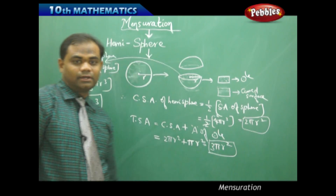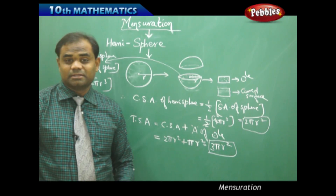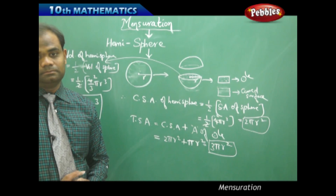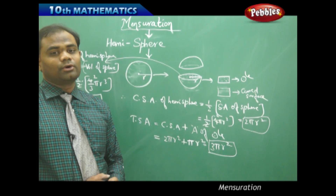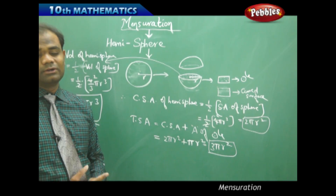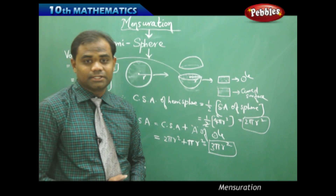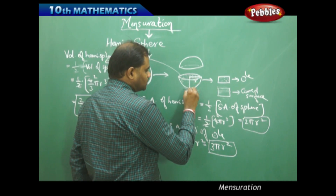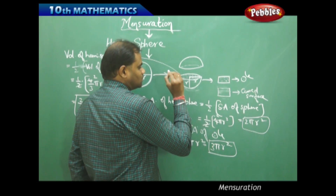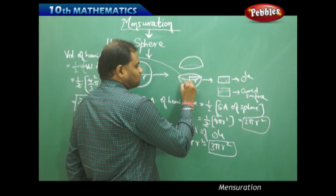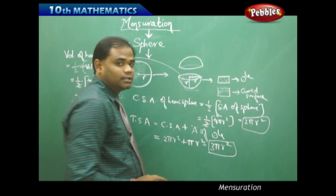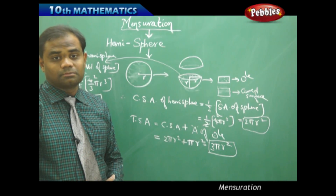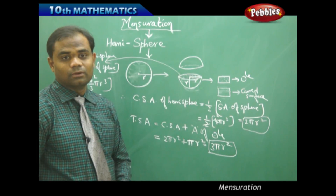The curved surface area, total surface area, and volume of the hemisphere are understood using these concepts. One important point to note — since the radius is r, the depth of the hemispherical ball is also r. Remembering that the depth equals the radius is very useful when solving complex problems.